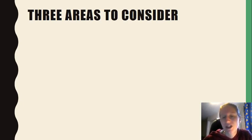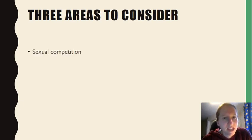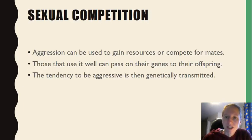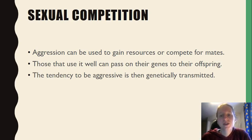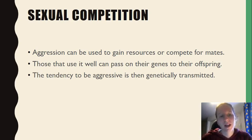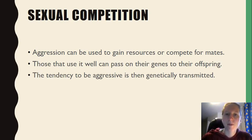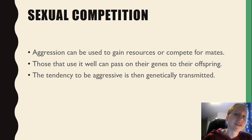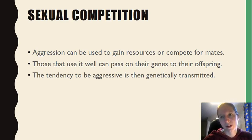Three areas to consider in relation to aggression: sexual competition, sexual jealousy, and warfare. Sexual competition is the idea that aggression can be used to gain resources or to compete for mates. People who use aggression effectively can pass on genes to their offspring, and the tendency to be aggressive is then genetically transmitted. Think about birds or animals fighting for mates — the most aggressive will gain a mate and pass on their genes.